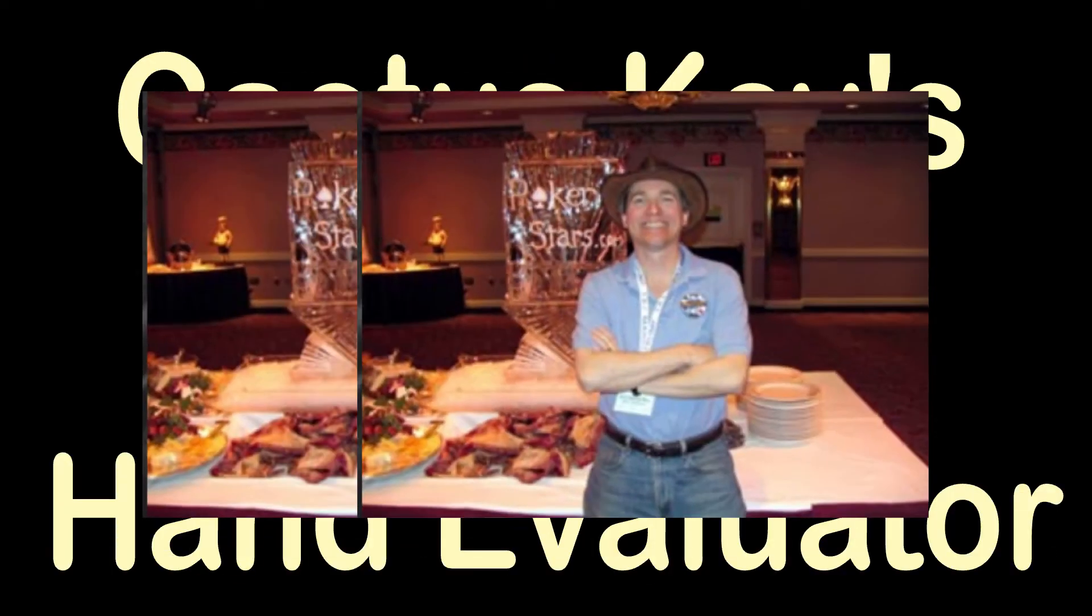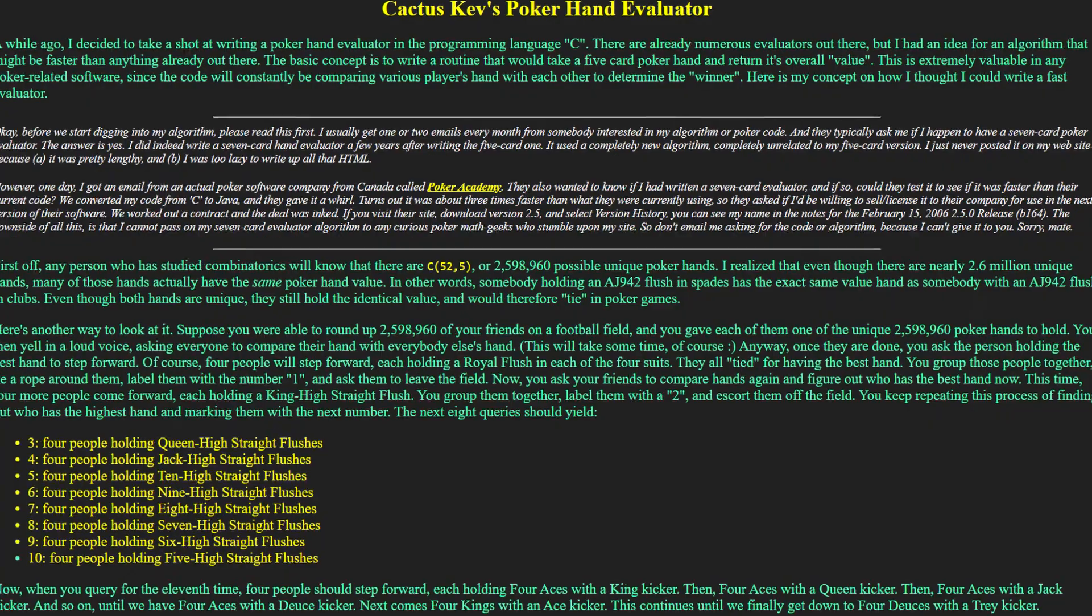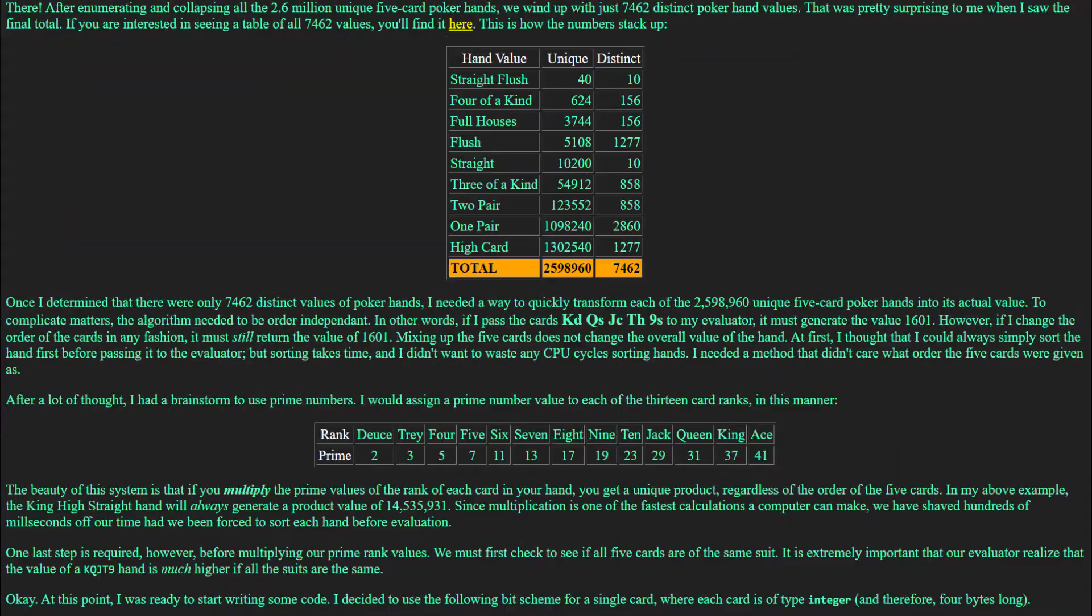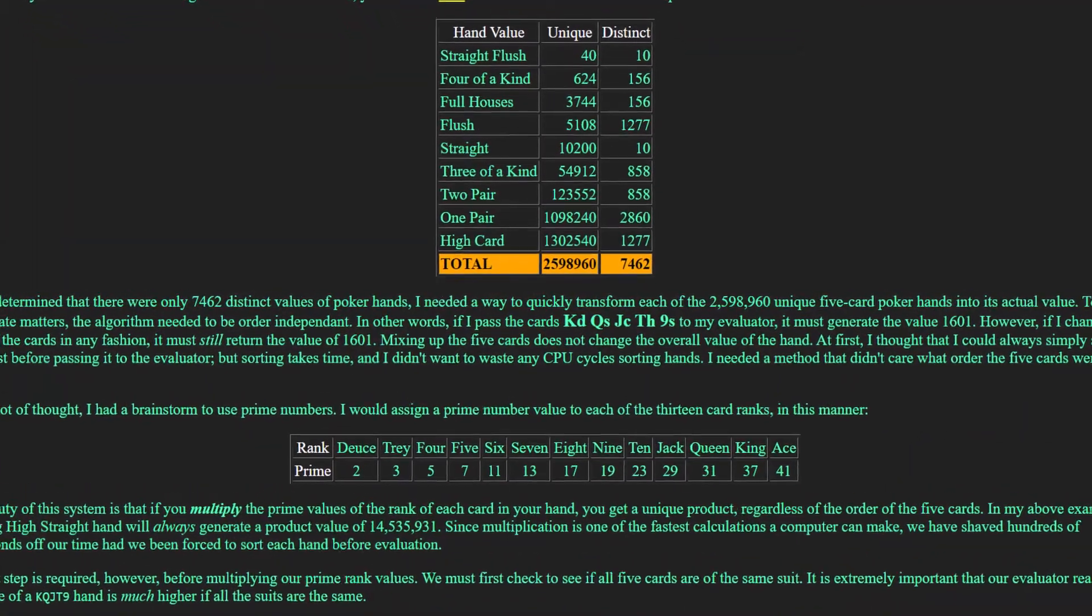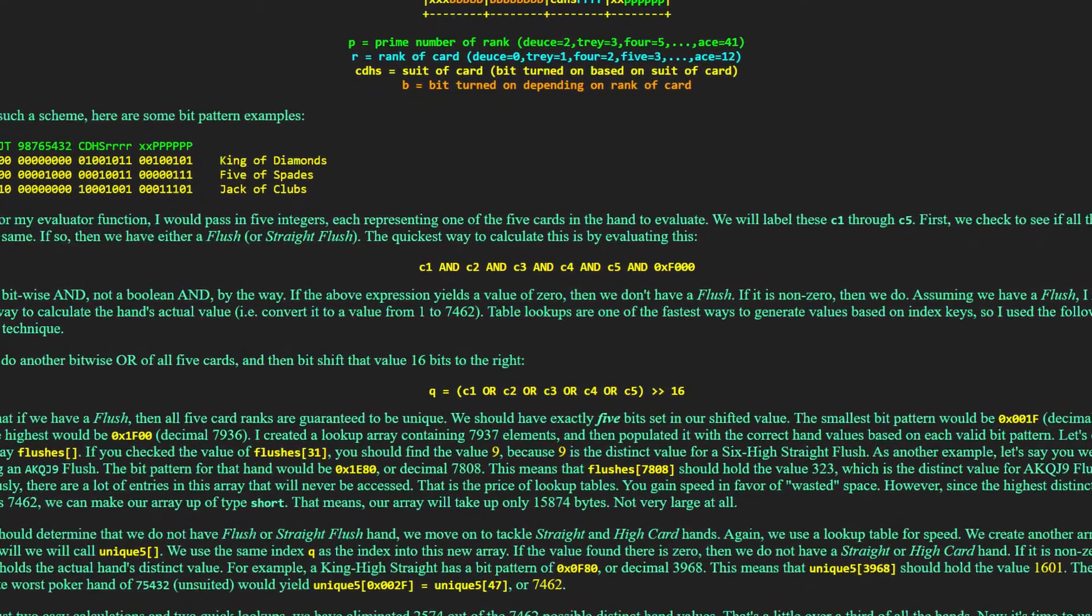Hi and welcome to Neat AI. This one is all about the famous Cactus Kev hand evaluator for poker. He's a guy who got bored one day and coded up a hand evaluator that beat the best available at the time. I've included part 1 for completeness.